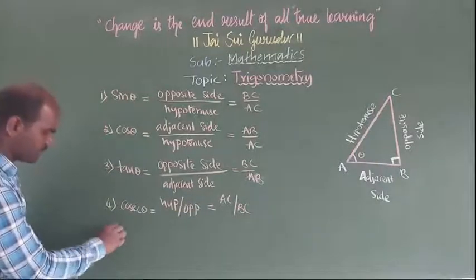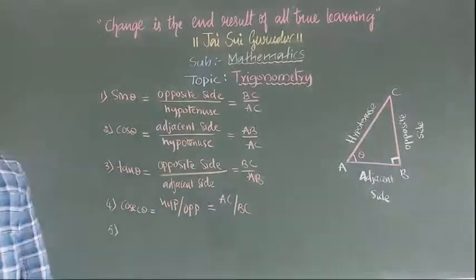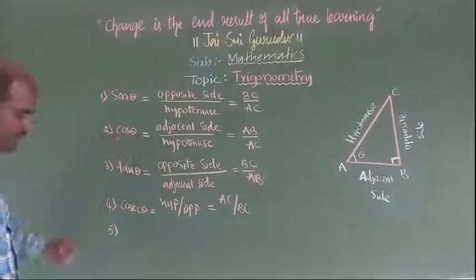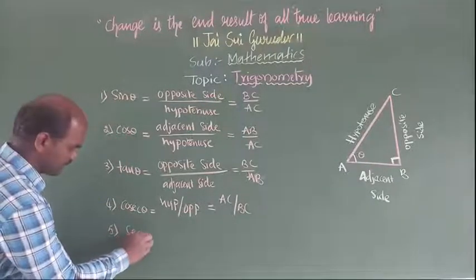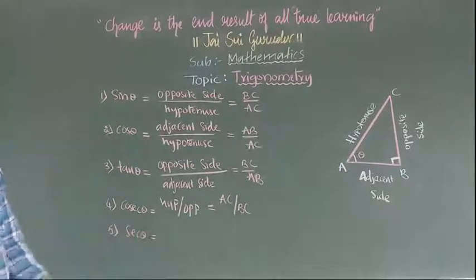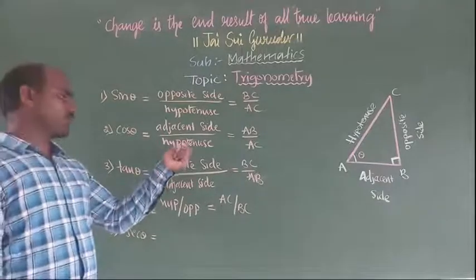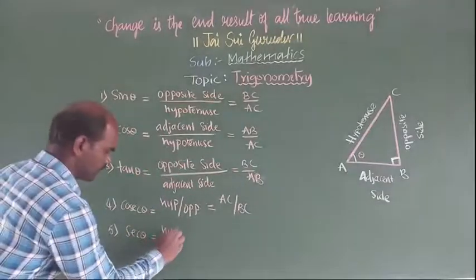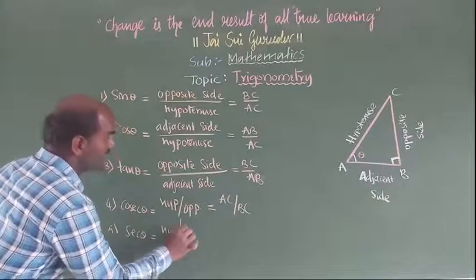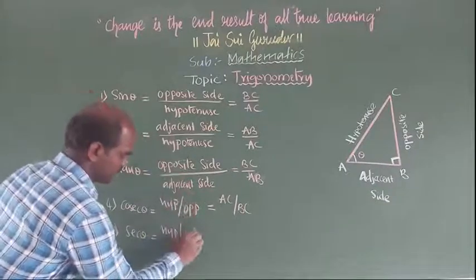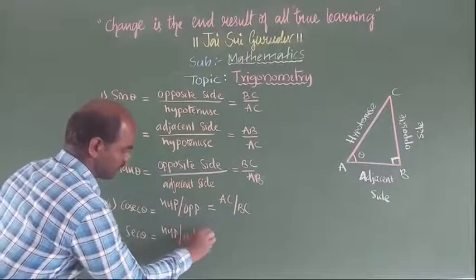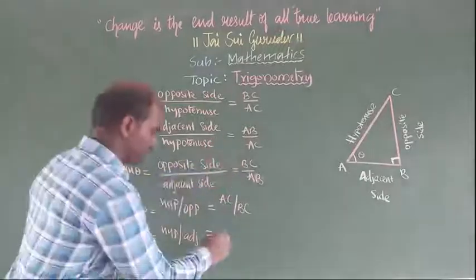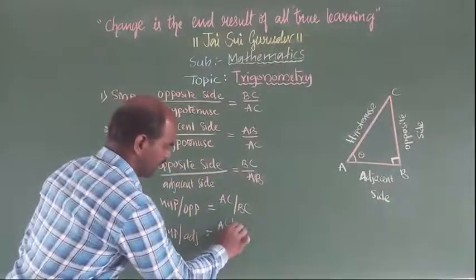The fifth one - the reciprocal of cosine is secant theta. Sec theta equals hypotenuse by adjacent, which equals AC by AB.